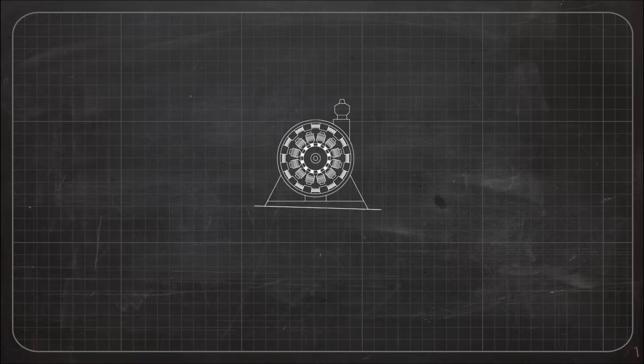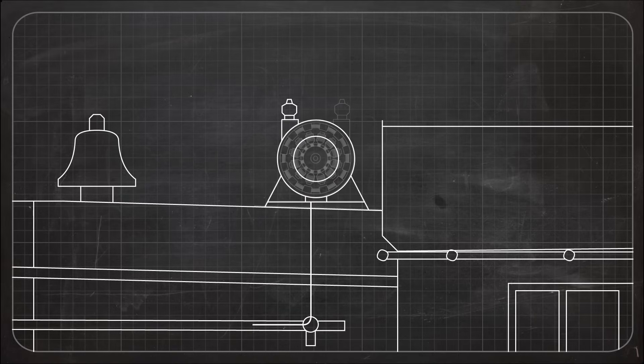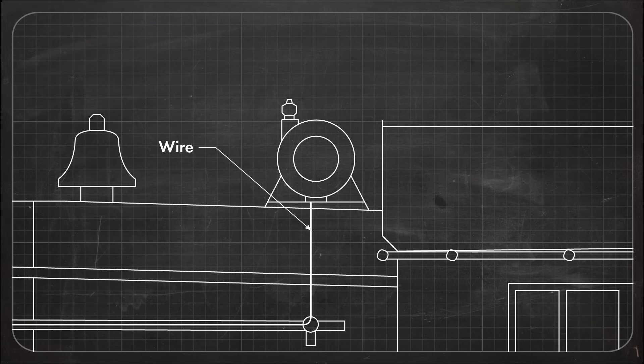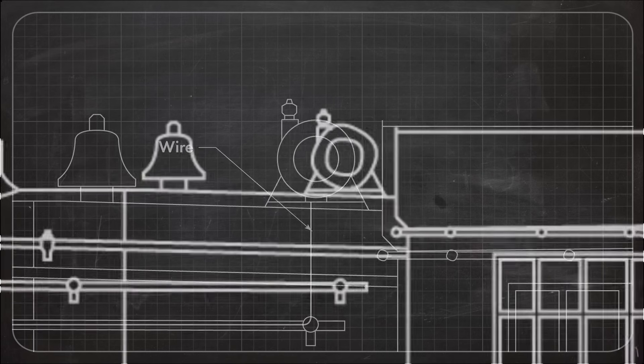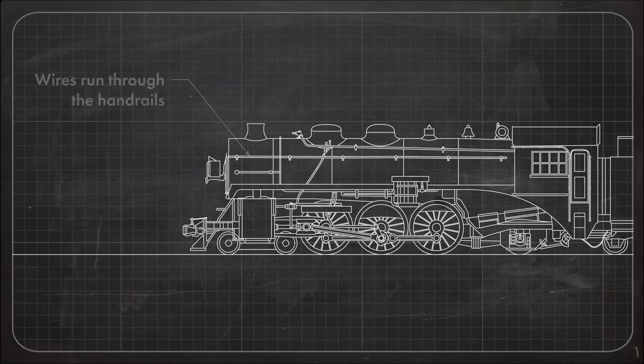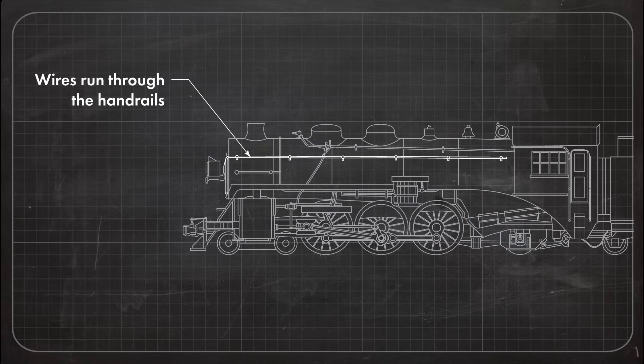The generator sends electricity through wires along the boiler's sides. They run to the front through either the handrails or separate insulated tubes, depending on the type of engine.